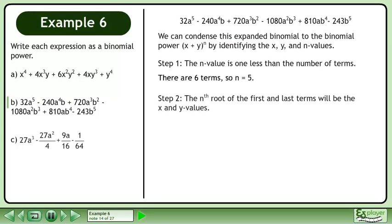In step 2, the nth root of the first and last terms will be the x and y values. The 5th root of 32 times a to the power of 5 is 2a, and the 5th root of negative 243 times b to the power of 5 is negative 3b.